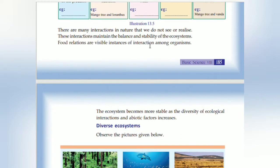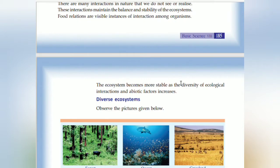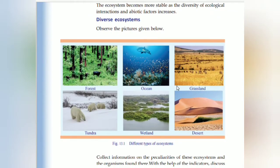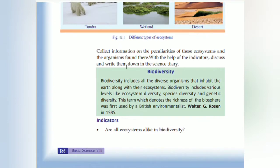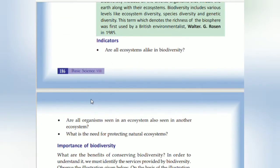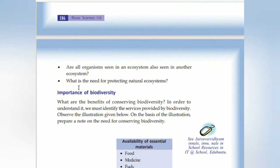Food relations are visible instances of interaction among organisms. The ecosystem becomes more stable as the diversity of ecological interactions and abiotic factors increases. Ecosystems include forest, ocean, grassland, tundra, wetland and desert. Biodiversity includes all the diverse organisms that inhabit the earth along with their ecosystem. Biodiversity includes various levels: ecosystem diversity, species diversity, and genetic diversity.